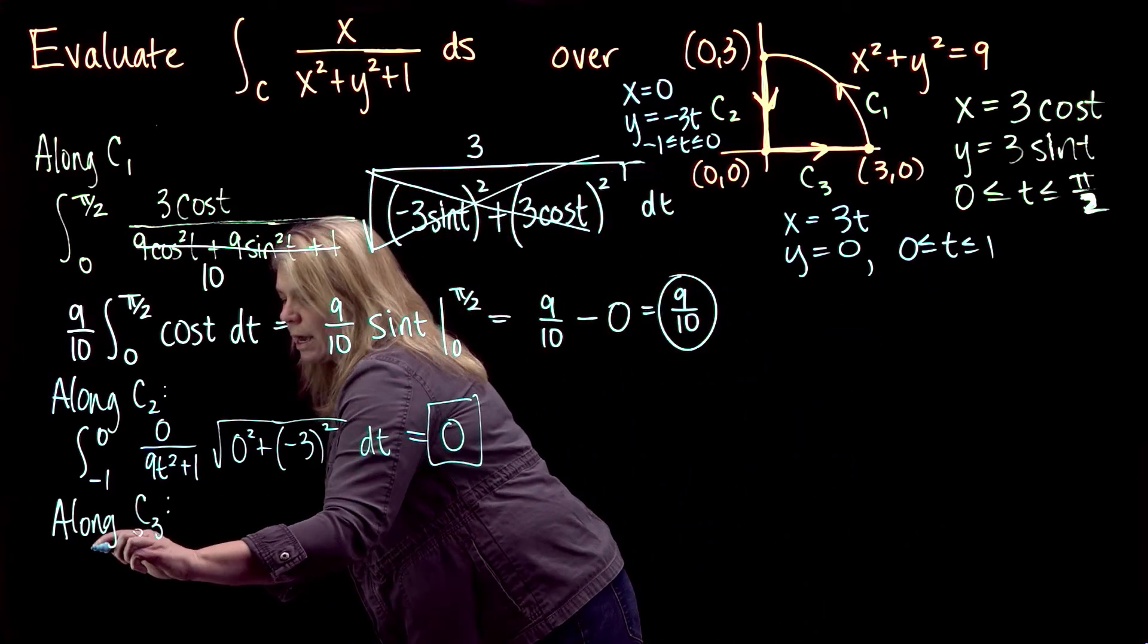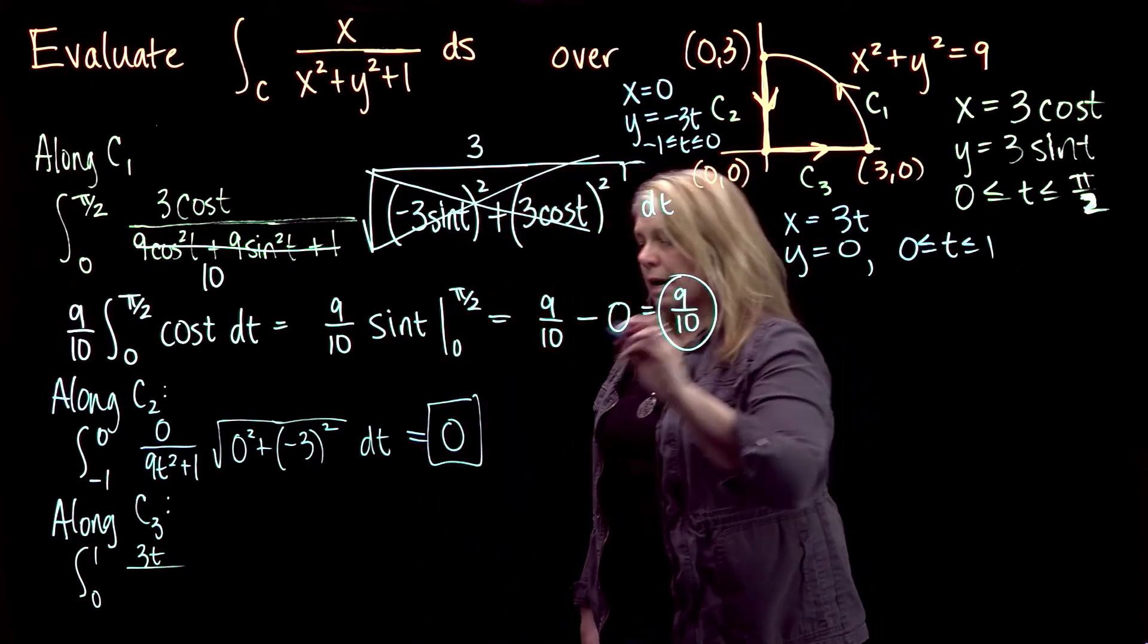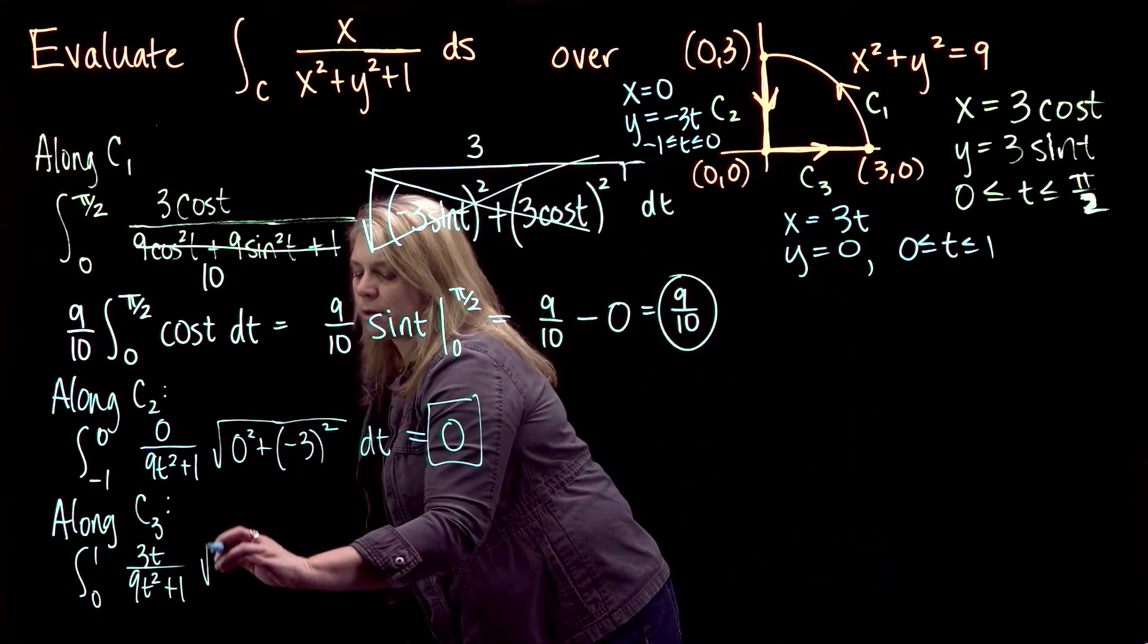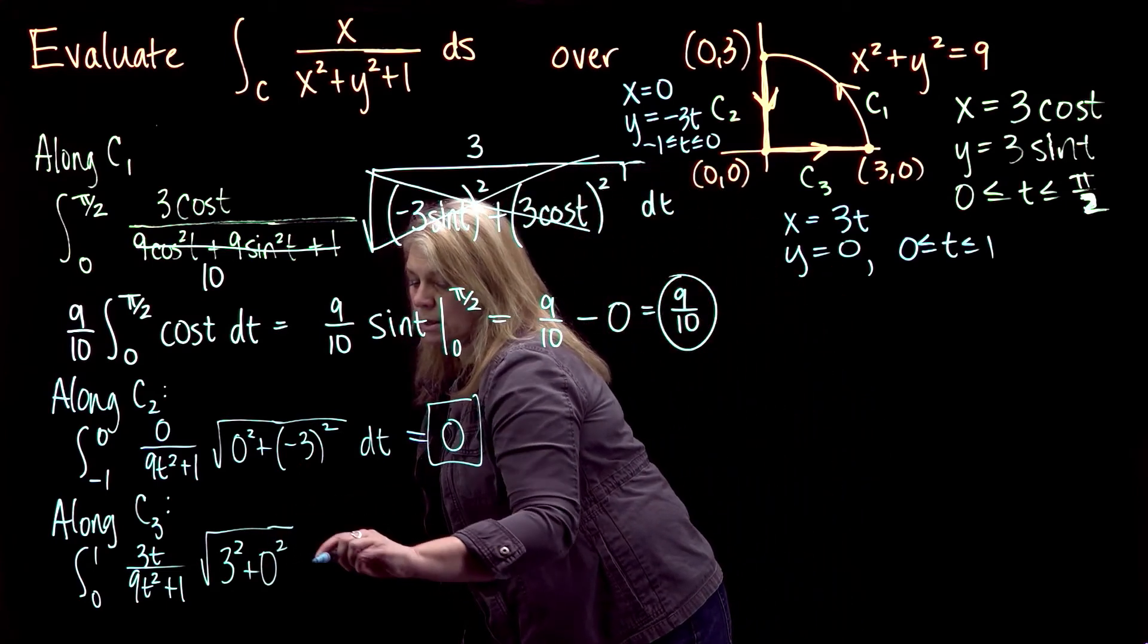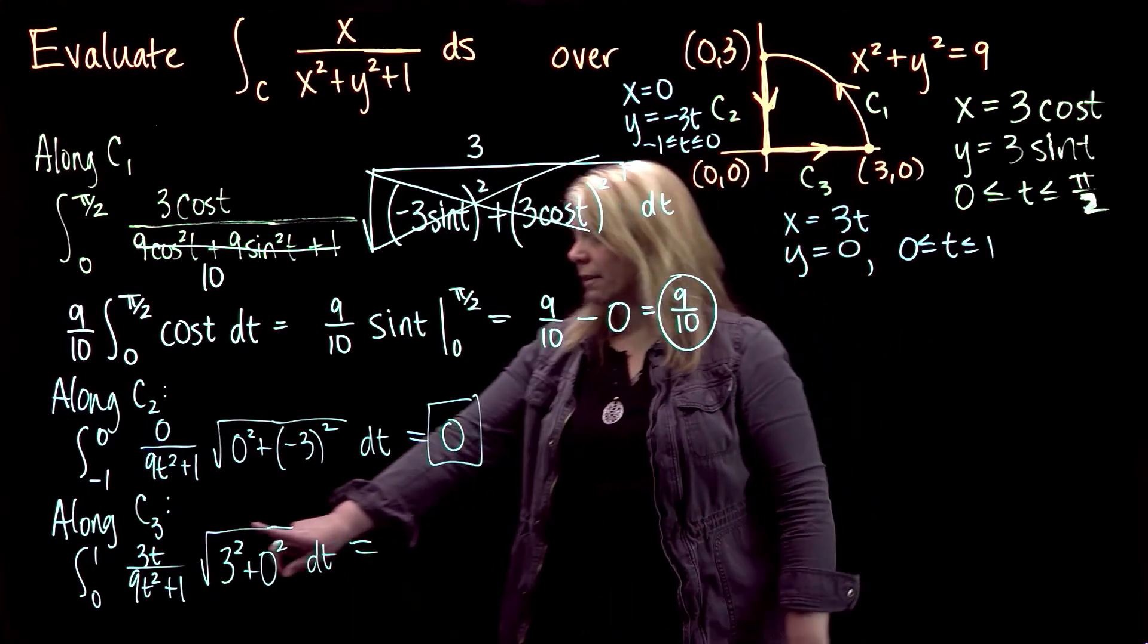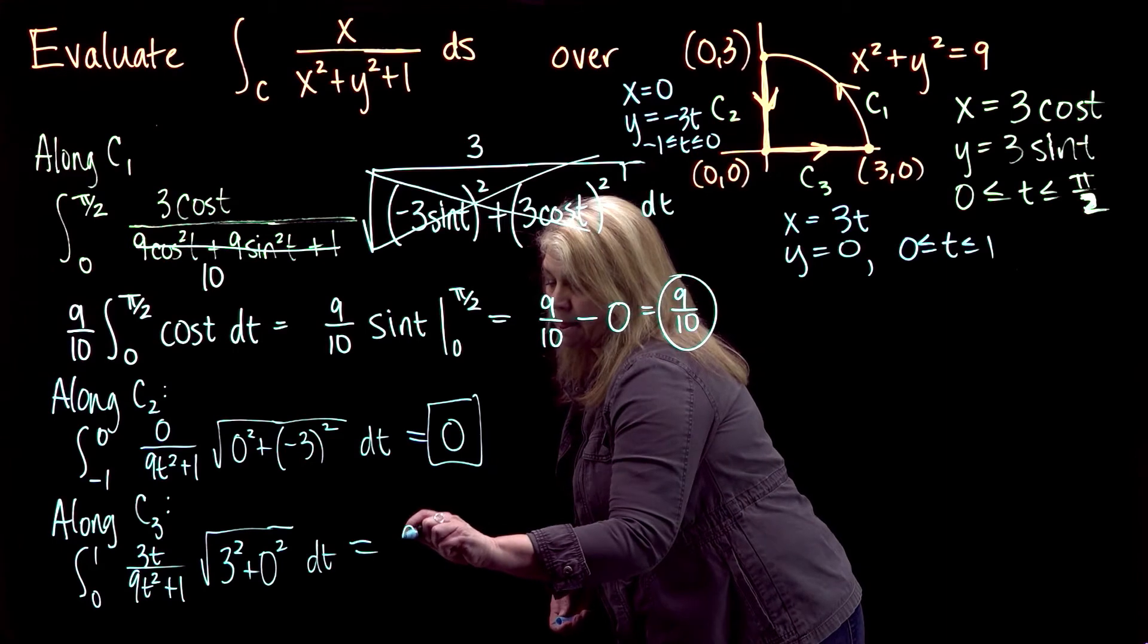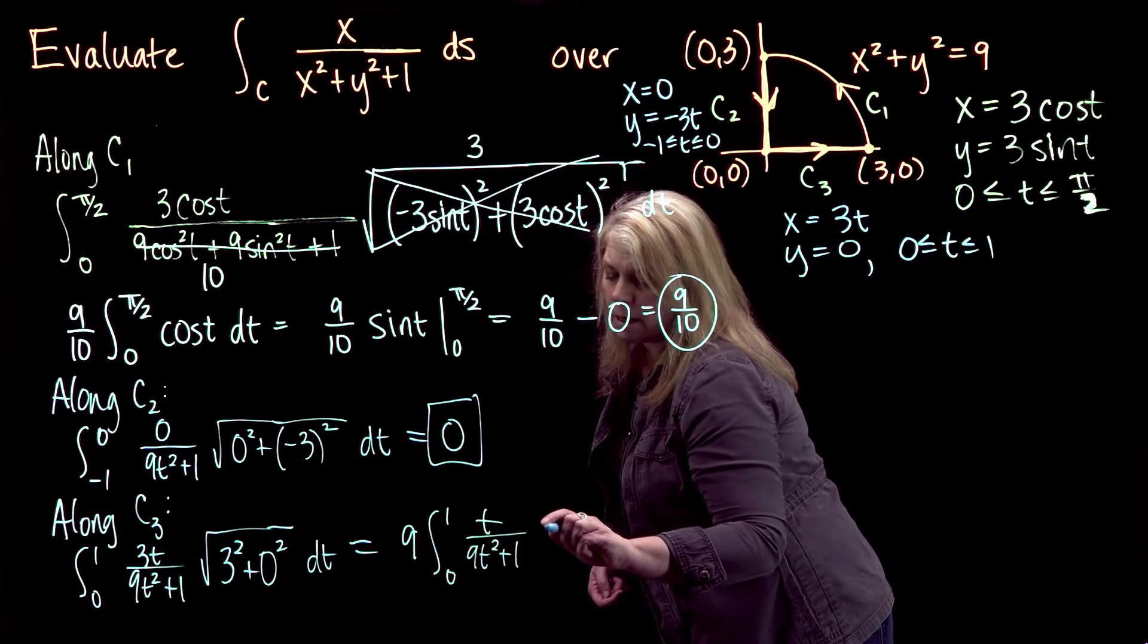I will integrate from 0 to 1. x is 3t over x squared will be 9t squared, plus y squared which is 0, plus 1. Then I need my ds differential: square root of dx/dt squared, so 3 squared, plus dy/dt squared, that will be 0, dt. I do have some constants I can pull out front. I've got a 3 from here, and when I simplify square root of 3 squared plus 0 squared, that's square root of 9 or 3. I'll have a 9 out front times the integral from 0 to 1 of t over 9t squared plus 1 dt.